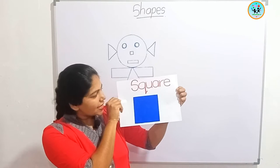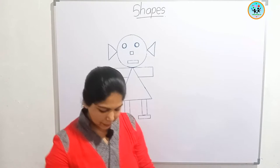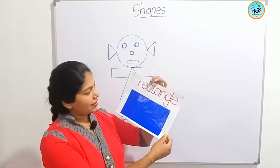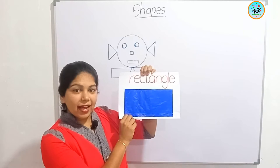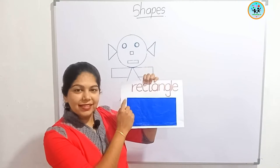This is called a square. What is this? Square. This is a rectangle. What is this? Rectangle.